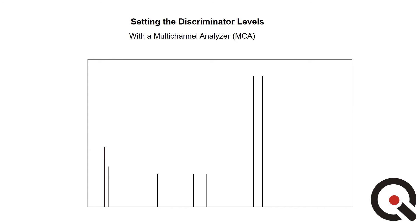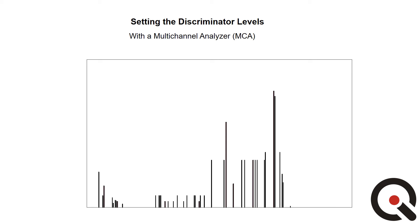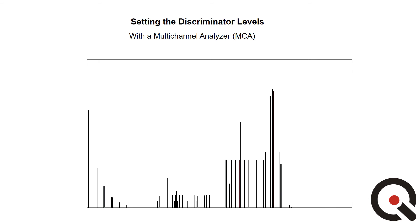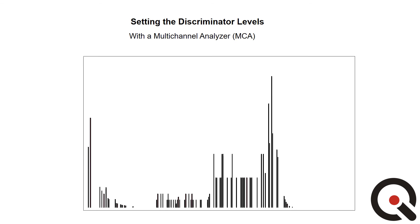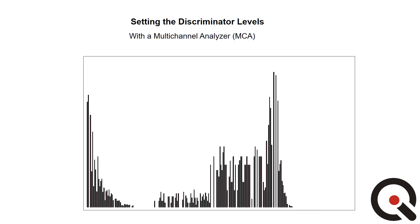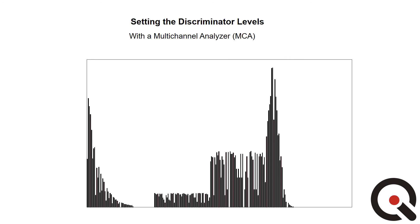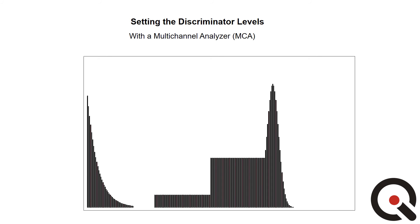However, with a multi-channel analyzer, the entire spectrum is visible and the user can see exactly where to set the discriminator values to maximize signal and reject noise. When using a multi-channel analyzer, the pulse-height spectrum histogram fills in over time and allows the user to visually identify features such as peaks and valleys. Clearly, using the actual pulse-height spectrum is a more direct and accurate tool in setting up your neutron detector parameters.